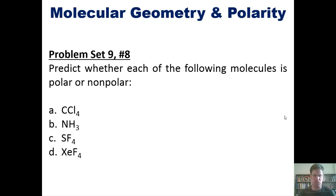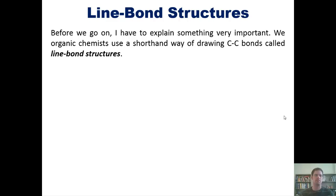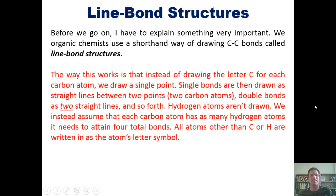Okay, one last subject for this video, at least, that of line bond structures. Before I go on any further, I have to explain something very important. We organic chemists use a shorthand way of drawing carbon-carbon bonds, which we call line bond structures. It's sort of like a lazy shorthand way, because I don't want to draw out all the hydrogens and everything. It takes forever. So the way this works is instead of drawing the letter C for each carbon atom, we draw a single point. Single bonds are then drawn as straight lines between two points, or two carbon atoms. Double bonds are drawn as two straight lines, and so forth. Hydrogen atoms aren't drawn.